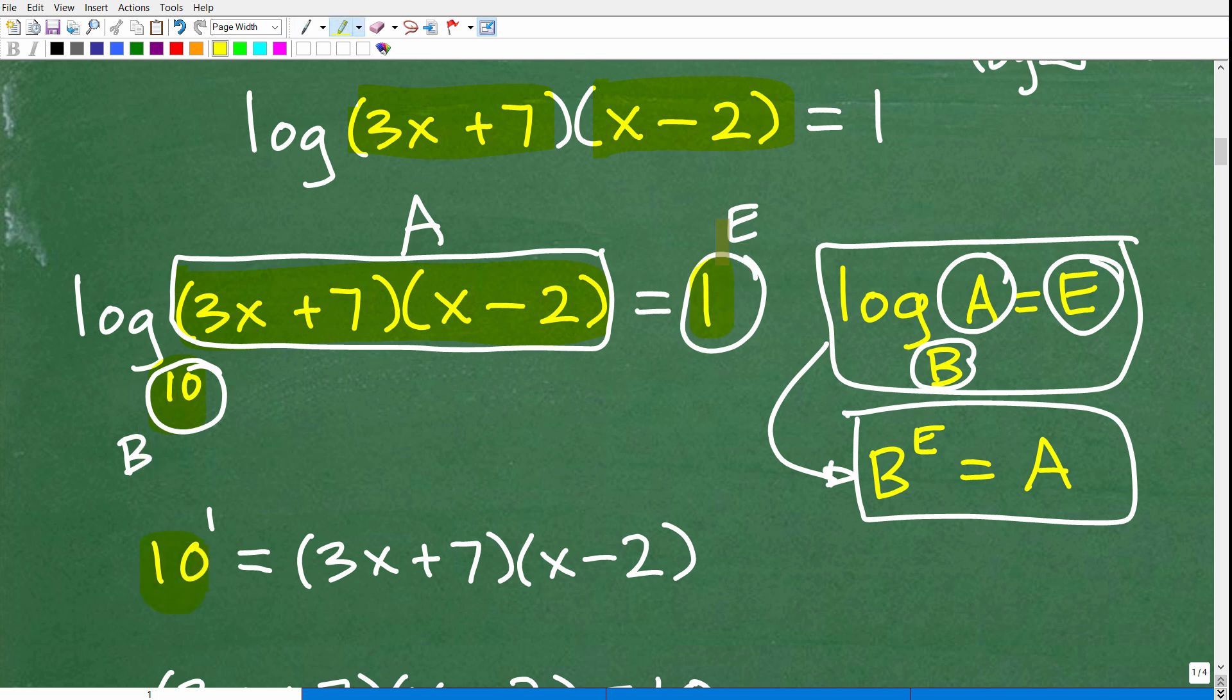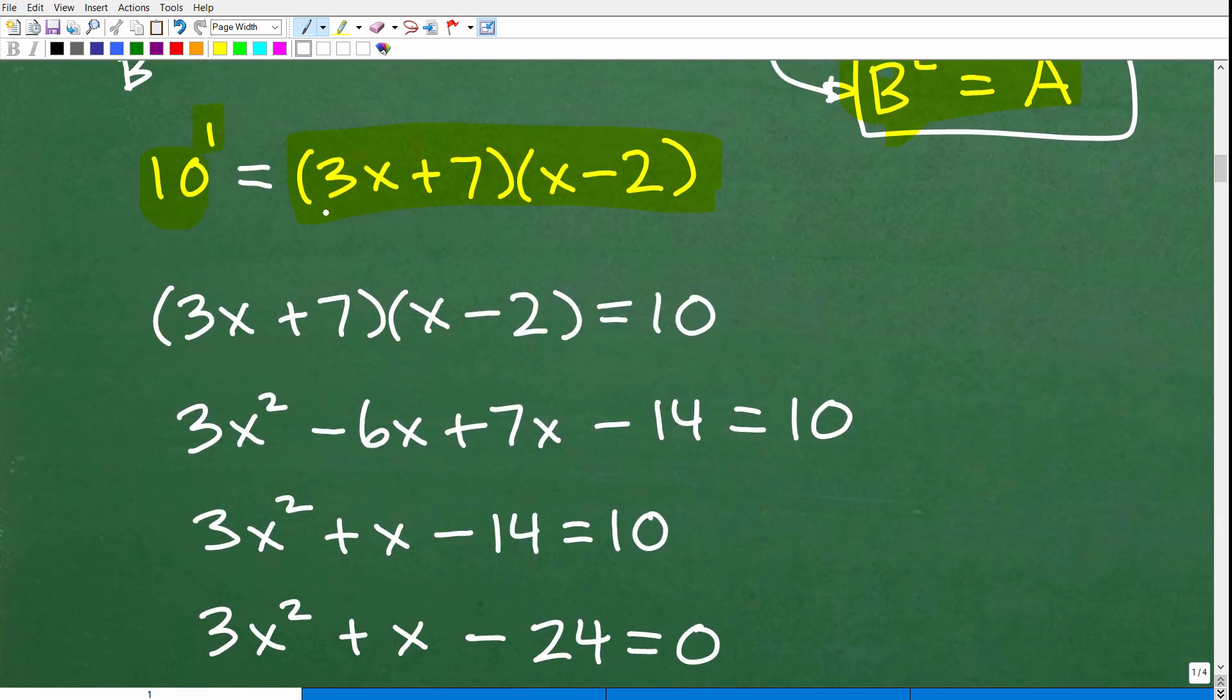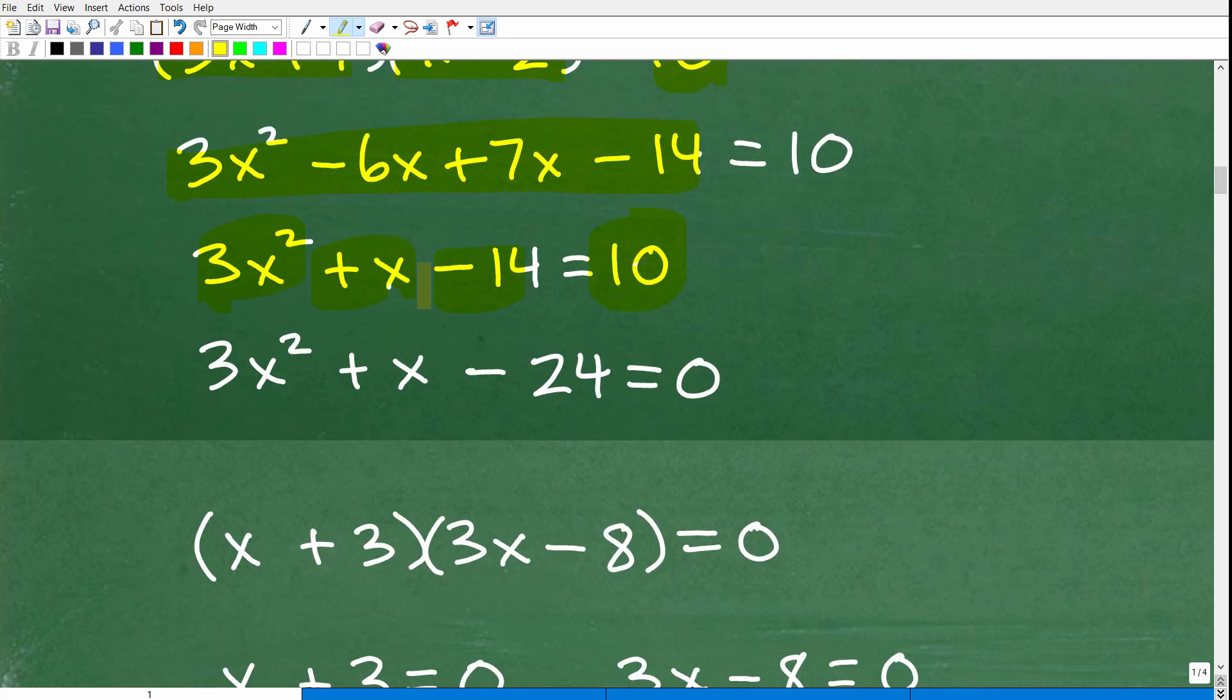The base is base 10. The exponent is 1. So 10 to the first is equal to the answer, which is this. So now let's continue on. 10 to the first is equal to 3x plus 7 times x minus 2. So it looks like I have a lovely quadratic equation I need to solve. So this times this is equal to 10. What I need to do here is multiply these two binomials. When I do that, I'm going to get 3x squared plus x minus 14, just showing you the work here. It's equal to 10. So now I have to solve this quadratic equation.